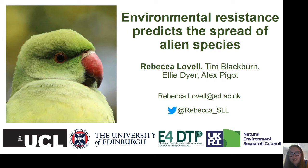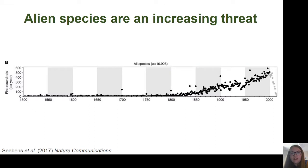This method is unique because it doesn't require any information on an invading species' ecological niche. Alien species are species that have been introduced to an area outside of their native range, and the number of newly recorded alien species is increasing dramatically. These species can have negative impacts on biodiversity, human health and human livelihoods, so we need to be able to reliably predict how they will spread in order to mitigate these potential impacts.